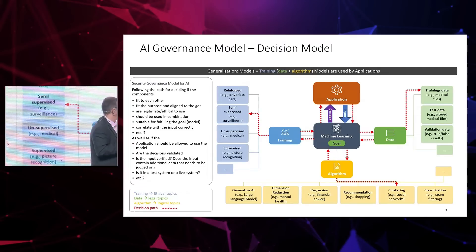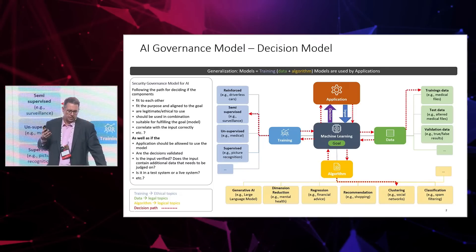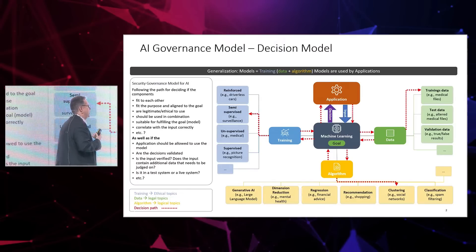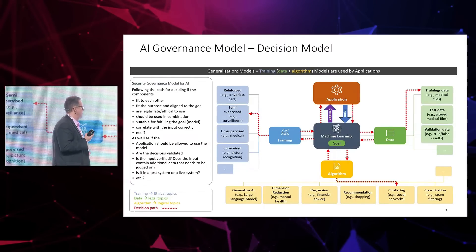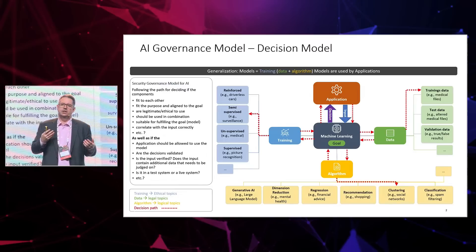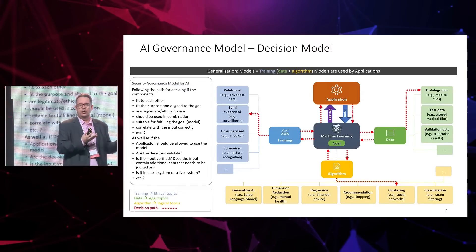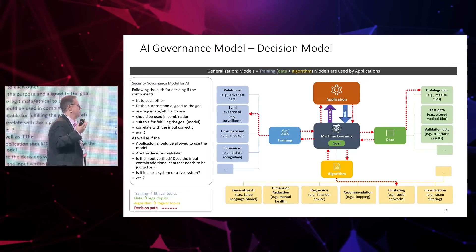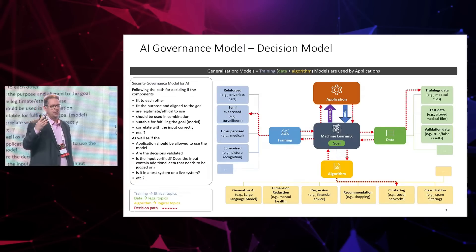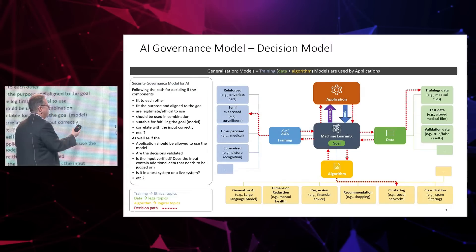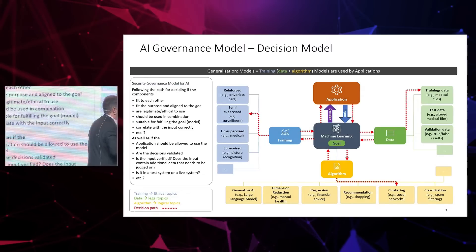I came up with this picture where I put machine learning — artificial intelligence, however you want to call it — in the middle. The first thing I'm expecting from someone developing an AI is that they define a goal. What do they actually want to achieve? 'Because I can' is not a goal. Let's assume we have a monitoring system that, during a job interview, monitors the candidate and gives you an indication if the candidate is a good one or not — then we have a defined goal.